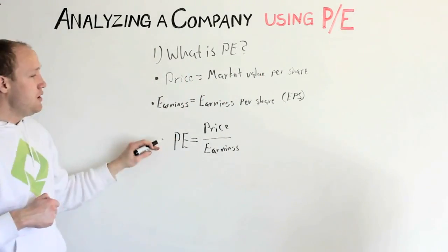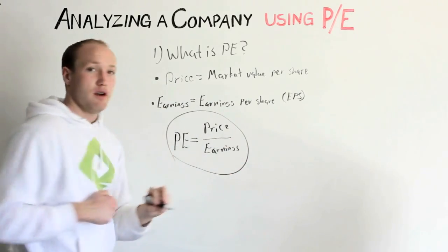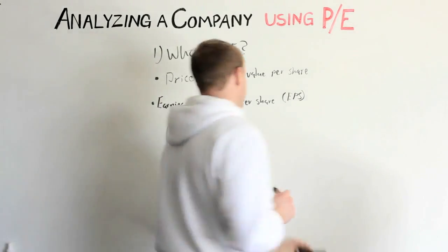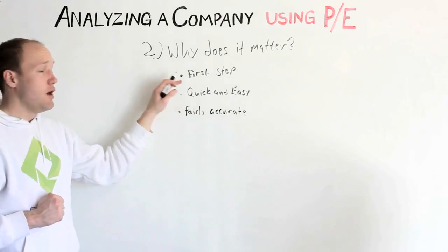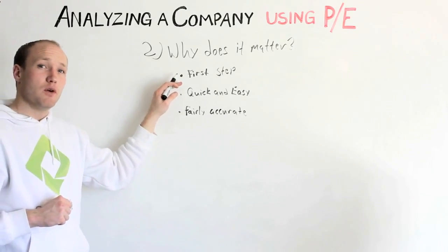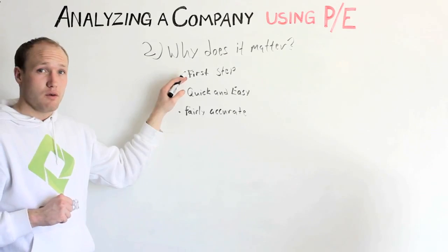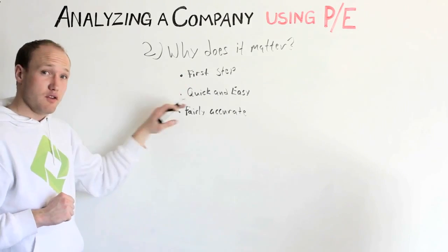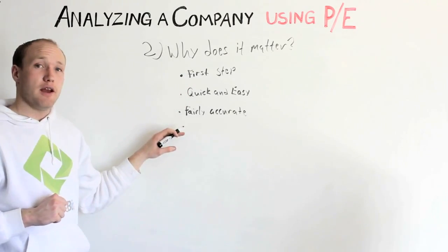What is PE? PE is price divided by earnings. PE matters because it should be the first step for anyone looking into buying or selling a share. It's quick and easy, and it's fairly accurate.